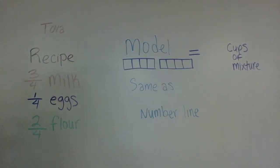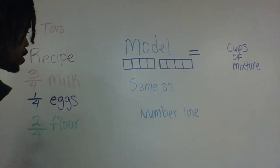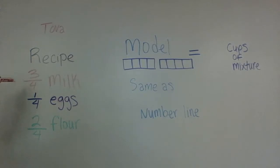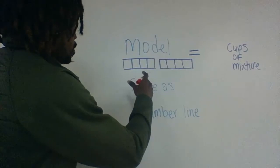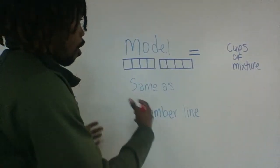So for our problem here, Tova is baking a cake and she has three quarters milk, one fourth quarter eggs, and half a cup of flour. In order for her to make her mixture, she combines all of them together.